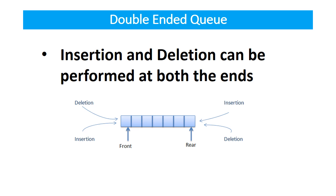But in double ended queue, insertion and deletion can be performed at both the ends. You can insert or delete at the front end. Similarly, you can insert or delete at the rear end.